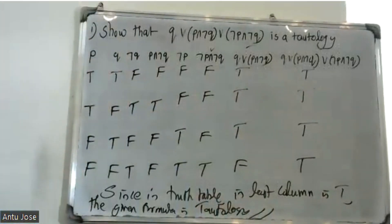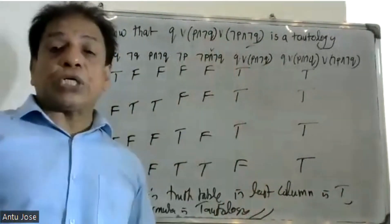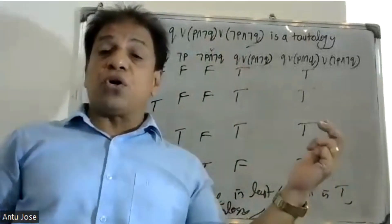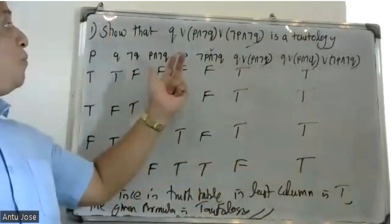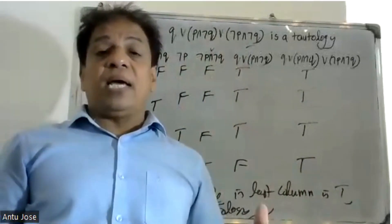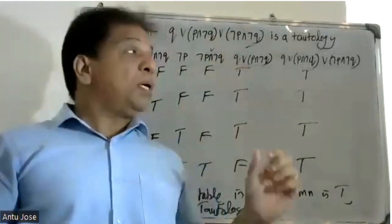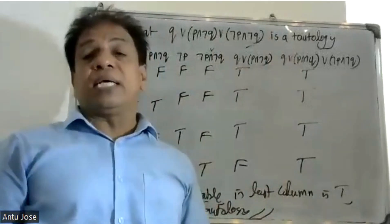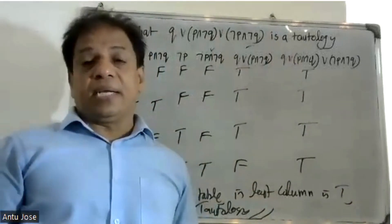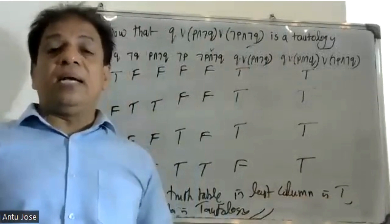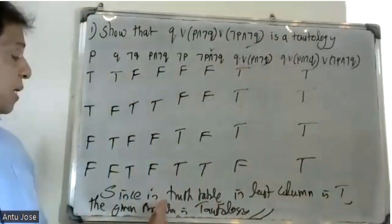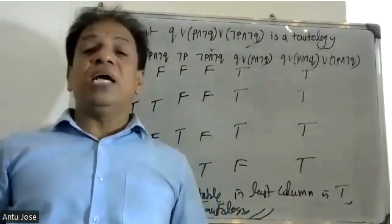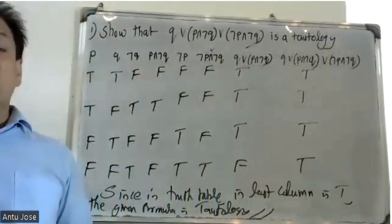Here we conclude tautology. Then we go to problems: truth table for disjunction, truth table for conjunction, truth table for negation. This is the truth table our system must know. Since the last column is T, therefore the given formula is a tautology.